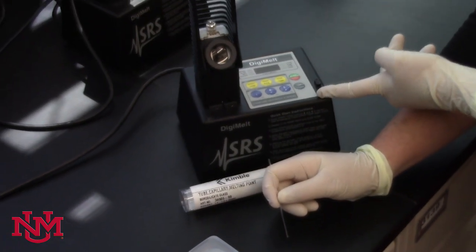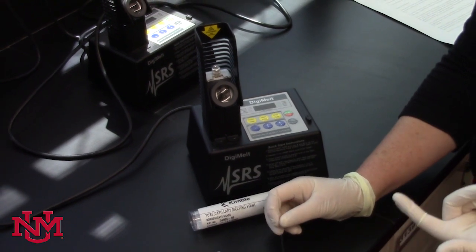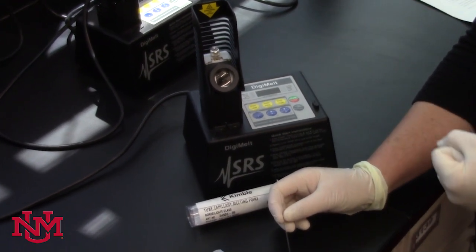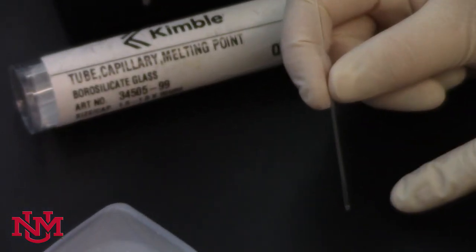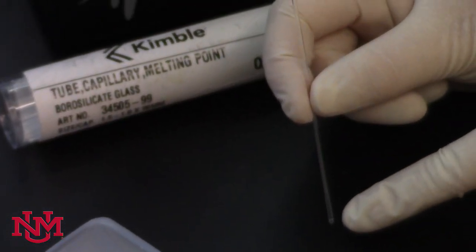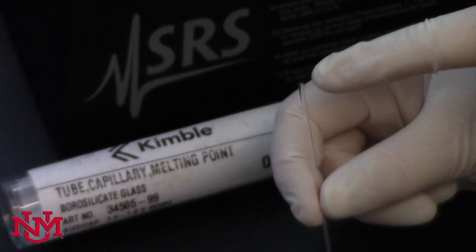We have digi-melts in our lab that are digital thermometers, and we also have some equipment we need to use in order to take the melting point. You'll need a melting point capillary. This is a glass tube that has a round sealed end and an open glass end where you add your sample.